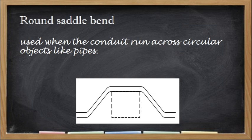The other name for the round saddle bend is the three-point saddle bend, because you will need to have three different bends. If it is rectangular, it is called a four-point saddle bend. Like this photo of a four-point saddle bend, you need four different bends in order for our conduit to traverse this rectangular obstacle.